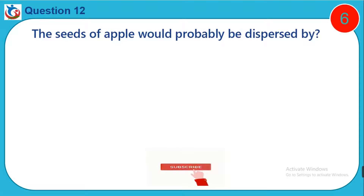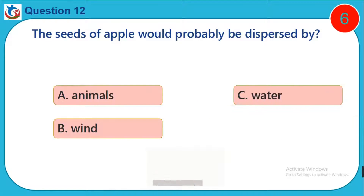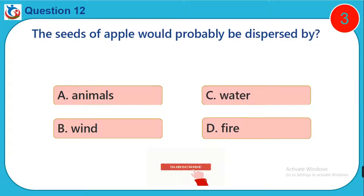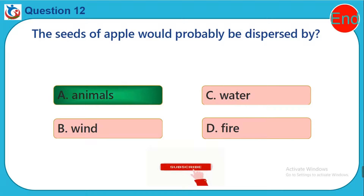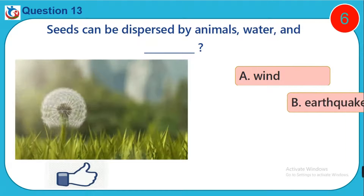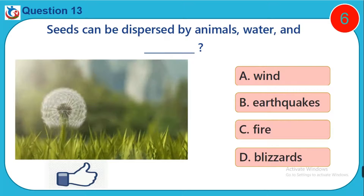Question 12. The seeds of an apple would probably be dispersed by: A. Animals. B. Wind. C. Earthquakes. D. Fire.